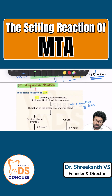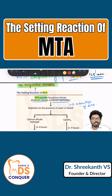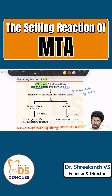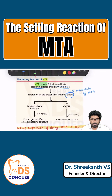MTA powder contains tricalcium silicate, dicalcium silicate, and tetracalcium aluminate. One of the biggest advantages of MTA is that even in the presence of water or blood in the periapical areas, MTA can still set.